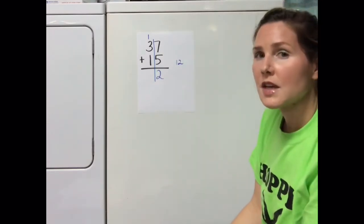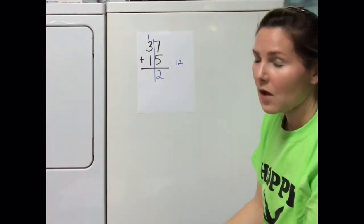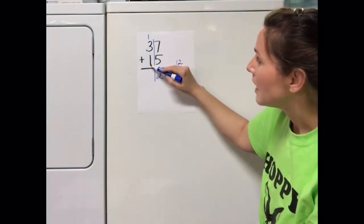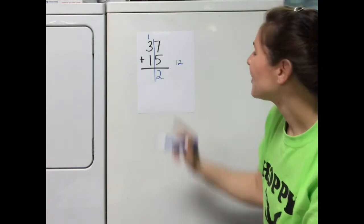Now the tens column used to say 3 plus 1. Now it says 1 plus 3 plus 1, and 1 plus 3 plus 1 is equal to 5. So the correct sum is 52.